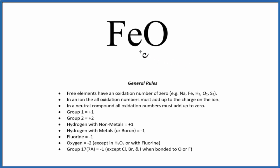To find the oxidation numbers for each of the elements in FeO, we'll use these general rules here. When we look at our rules, we don't see iron. In fact, iron can have different oxidation states depending on what it's bonded to.